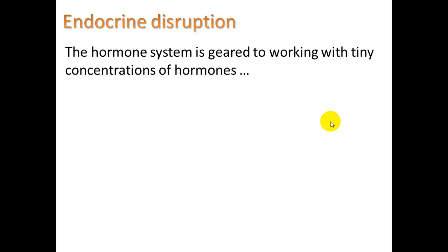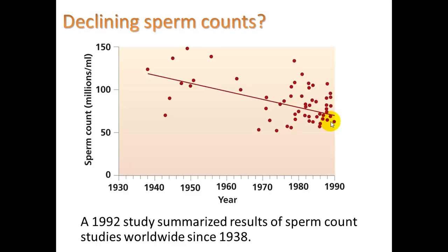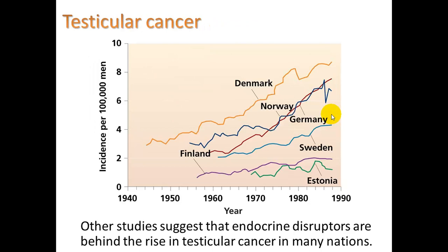The hormone system is geared to working with tiny concentrations — it doesn't take much testosterone to make cells develop as male — and because it works with such tiny concentrations, it can be influenced by tiny concentrations of environmental contaminants. We do see declining sperm counts since the 1930s, right around the time synthetic chemicals began entering our environment, falling from about 120 million per milliliter down to about 70 by 1992. By now, sperm counts are likely at least half or less than half of what they used to be. Testicular cancer is also on the rise and may be related.